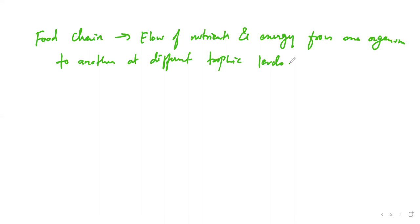Food chain means the flow of nutrients and energy. As I told you, how the plants produce their own food — this food is eaten by the next category, which is herbivores, then eaten by carnivores. This is the transfer of nutrients or energy from one level to another. The food chain flow is a single unidirectional flow.